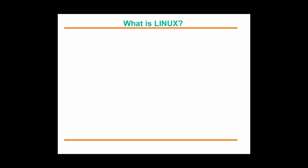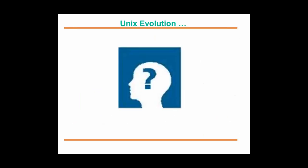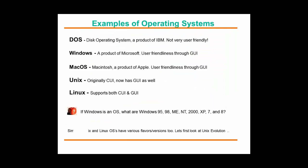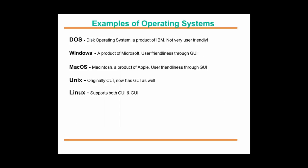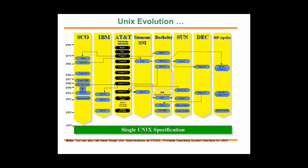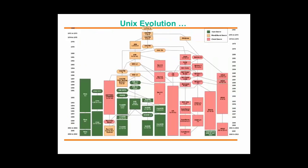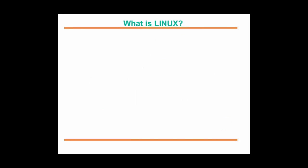To do a quick recap: we looked at the definition of an operating system — an interface between hardware components and application users. We looked at various examples of operating systems, then how the UNIX world came into the picture, the UNIX evolution, how the industry took the base source code and released their own versions, and how for portability's sake they came up with the POSIX standard. We also looked at open source, closed source, and mixed source. So what is Linux and where did it come from? That's what we'll cover next.